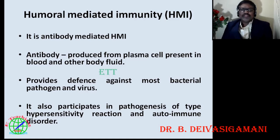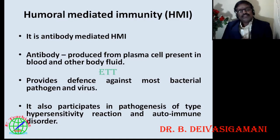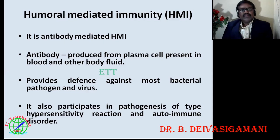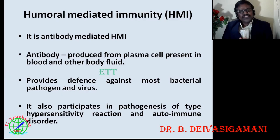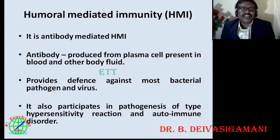HMI is antibody-mediated immune response. The antibody is produced from plasma cells, which play a key role in producing antibodies in the system. Especially in fishes, the head kidney plays an important role in developing and producing antibodies. These plasma cells are present in blood and other body fluids such as lymph fluid. HMI provides a defense against most bacterial pathogens and viruses. It also participates in the pathogenesis of type hypersensitivity reactions and autoimmune disorders.